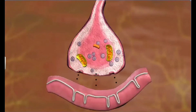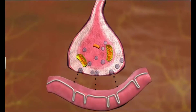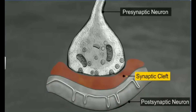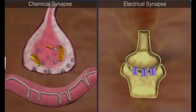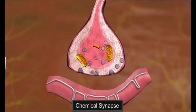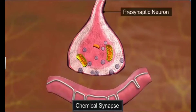Junctions help transmit the nerve impulse from one neuron to another. These junctions are called synapses. A synapse is formed by the membranes of a pre-synaptic neuron and a post-synaptic neuron, which may or may not be separated by a gap called the synaptic cleft. There are two types of synapses based on the nature of transfer of information: chemical synapses and electrical synapses. Chemical synapses are common in the human system and consist of a pre-synaptic neuron, synaptic cleft, and a post-synaptic neuron.